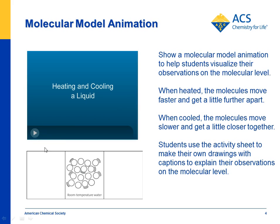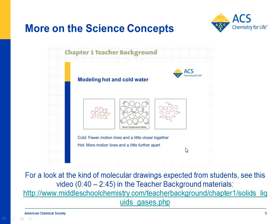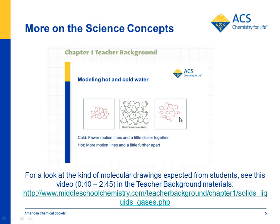On the activity sheet, students draw circles to represent the particles with motion lines. For room temperature, particles are shown randomly arranged with two motion lines. For cold, they can be a little closer together with one motion line, and for hot, a little further apart with three motion lines. In the teacher background there's a video at a provided link showing examples of the kinds of drawings kids might come up with.